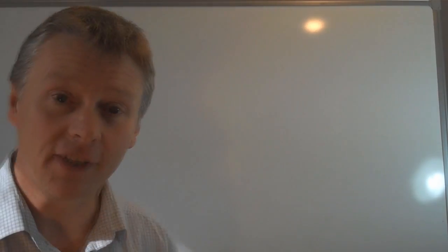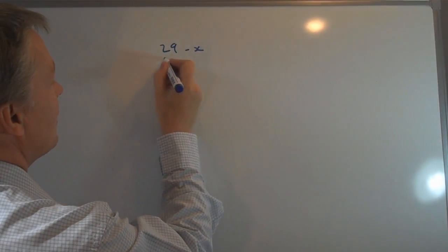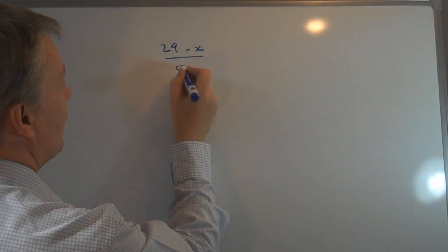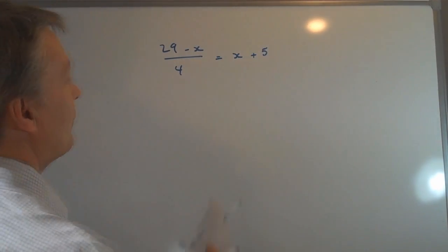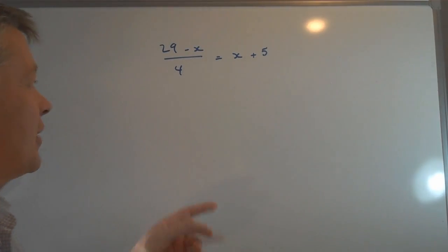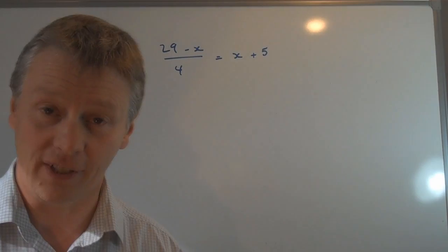So we'll have an example, and it would be something like, let's say it would be 29 minus x divided by 4 equals x plus 5. Okay, so with this particular equation, we've got a little bit of a difficult one because we've got to divide by 4 on the left-hand side.